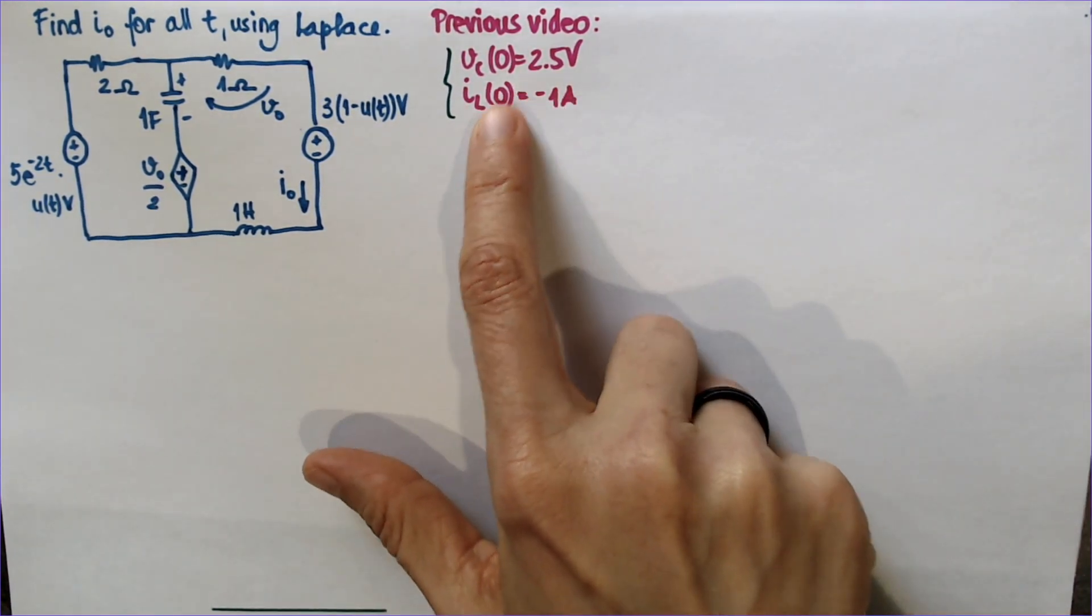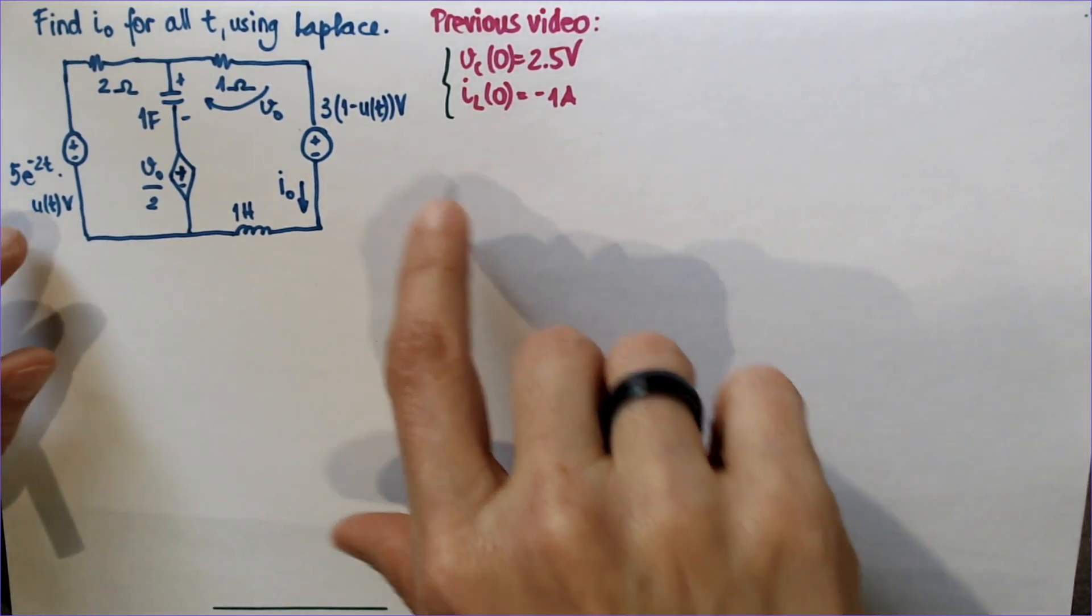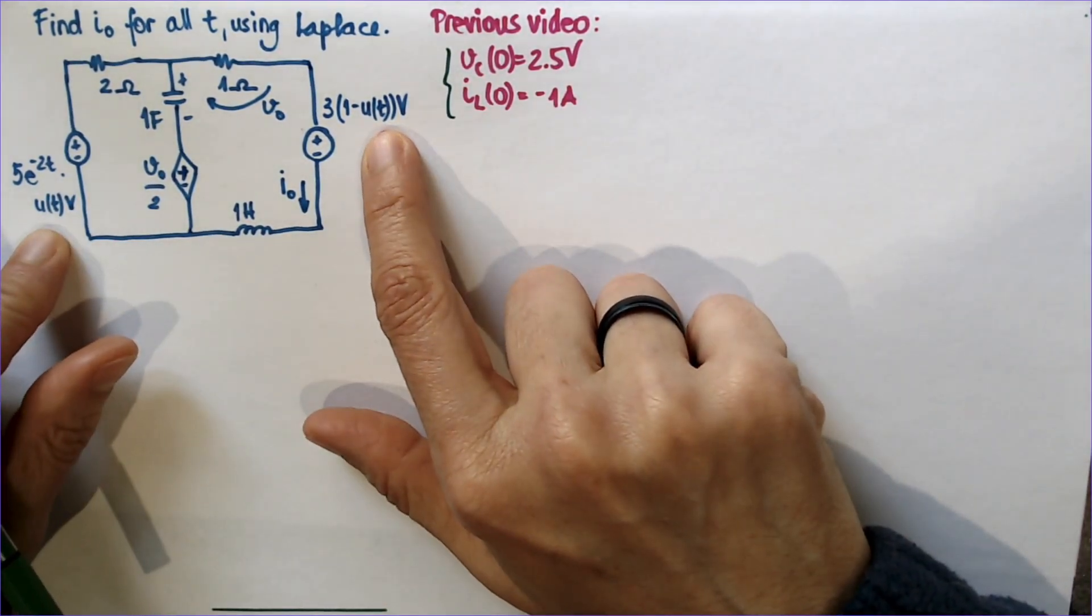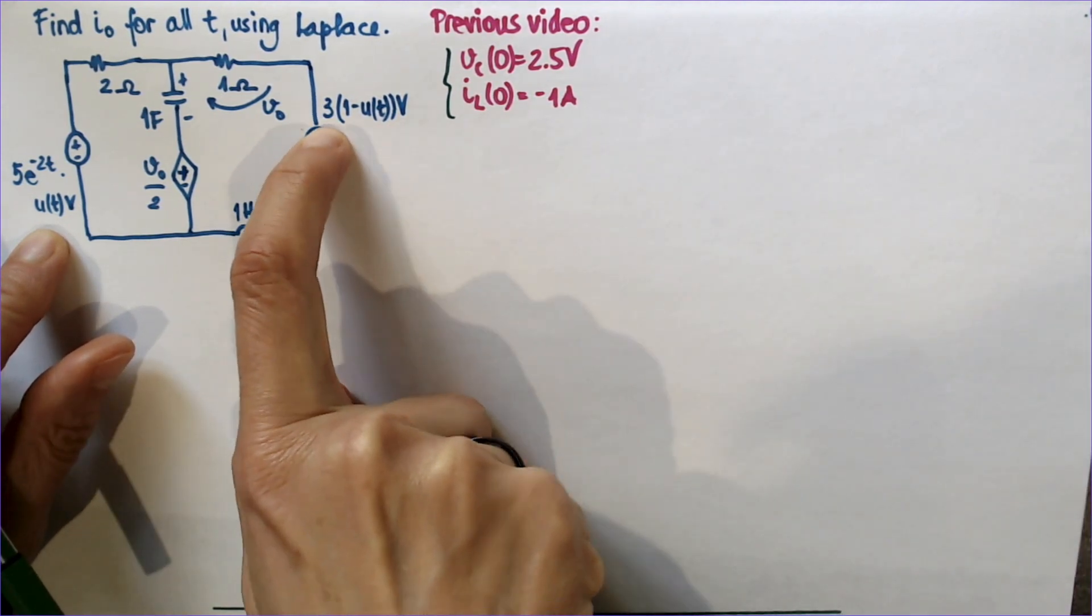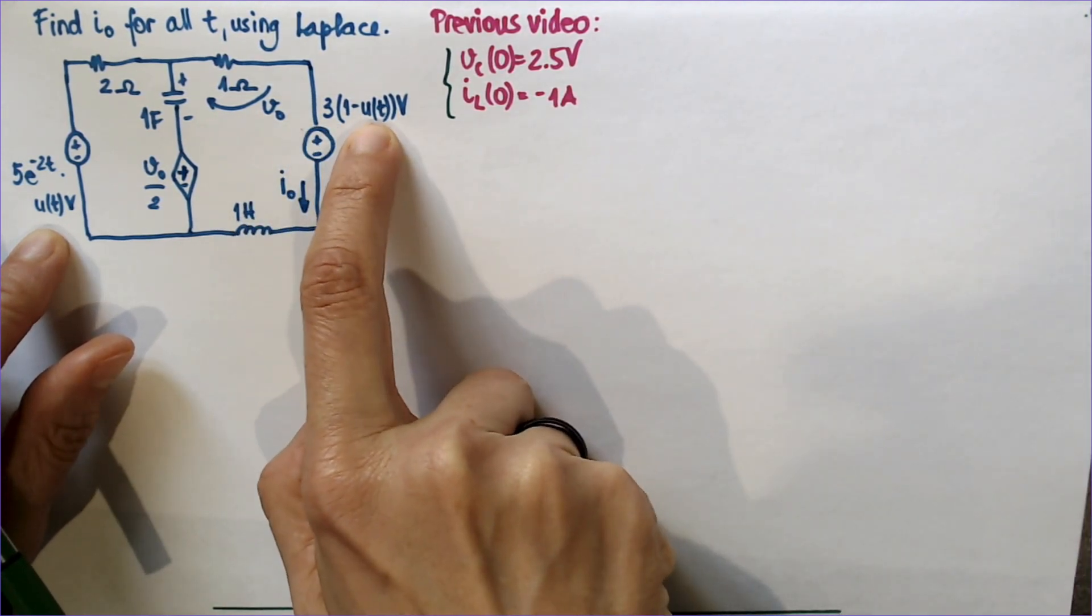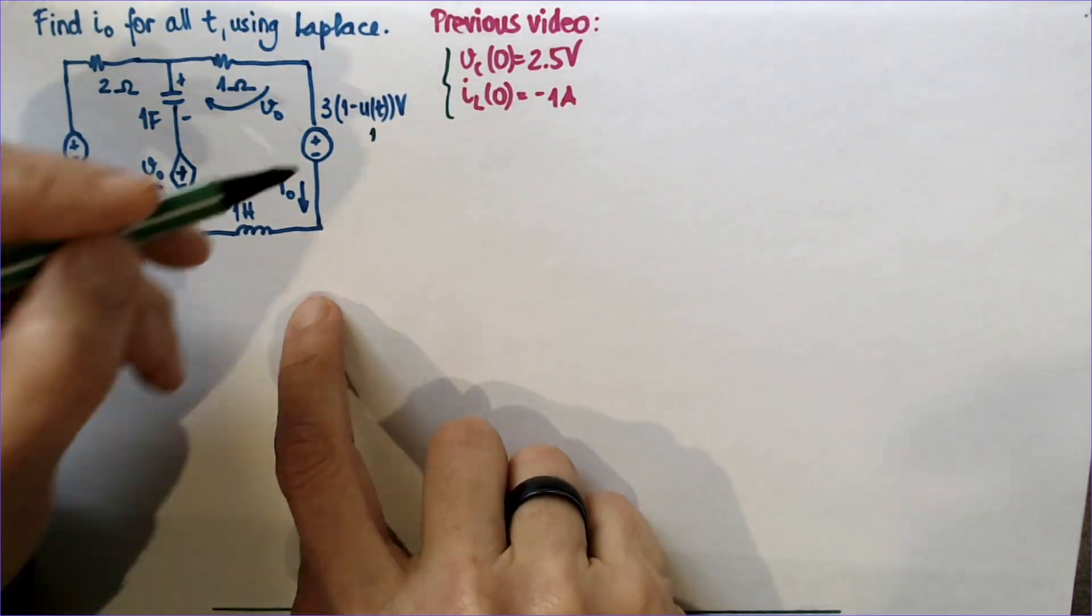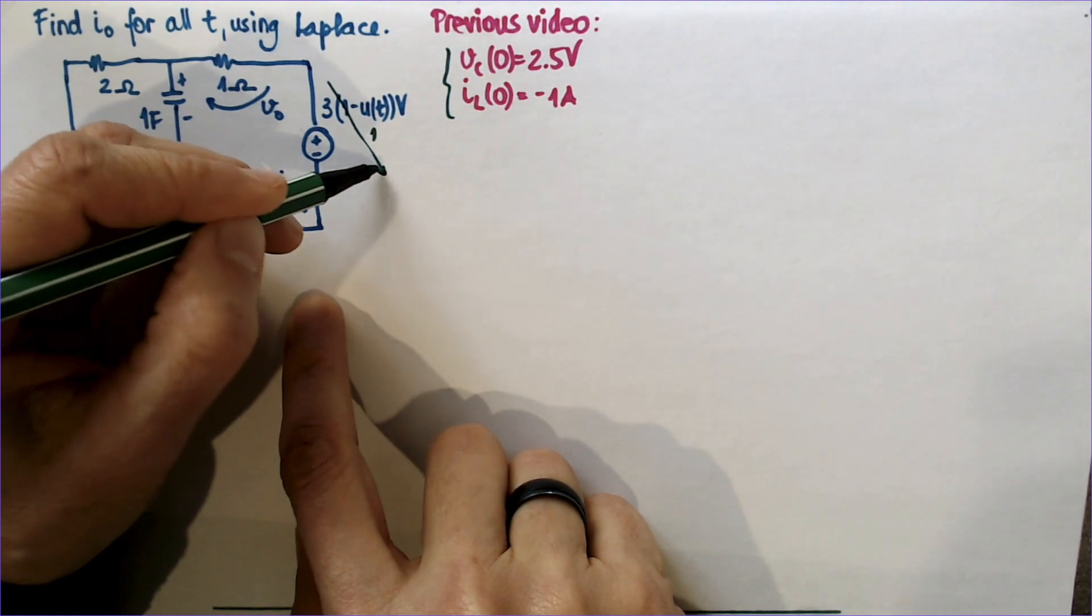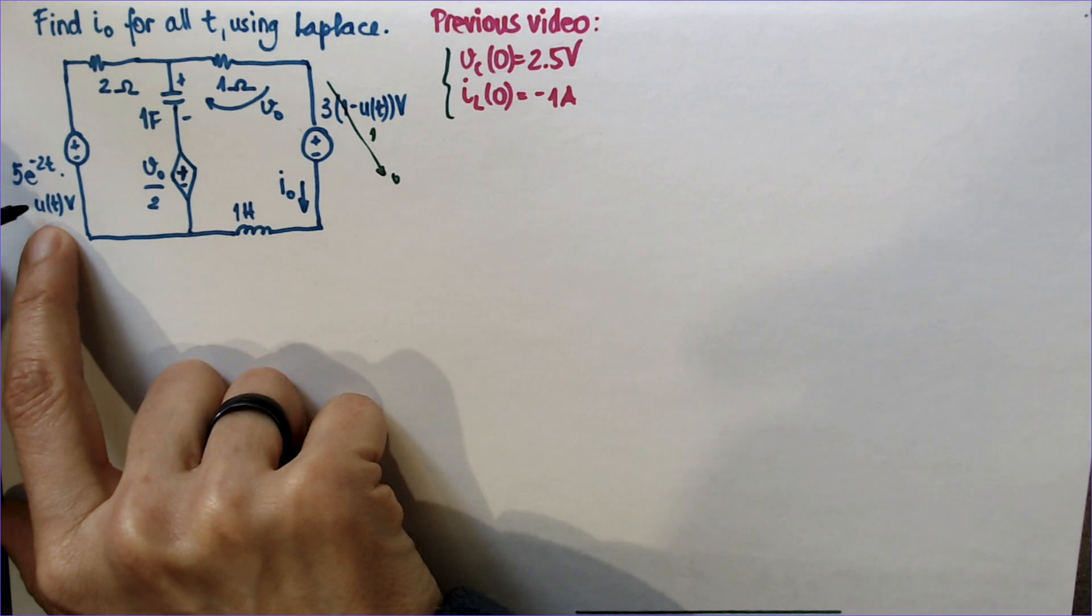So the question really is what happens during this time between zero and infinity? These are the two power supplies that are active. Even though this power supply is active for t larger than zero, u(t) is one, so one minus one is zero. So this power supply gets turned off, goes to zero volts. And this power supply is on.